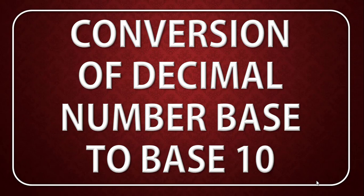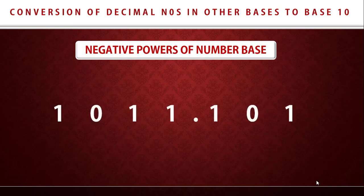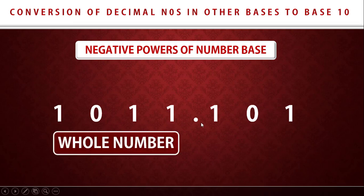In this lesson I'll be showing you problems related to decimal numbers in a particular base converted to base 10. Before we get started I need to make something clear about the negative parts of number base. For instance, given a number 1011.101, the 1011 is the whole number part — that's the number before the decimal point. This time around we are making use of decimal numbers, so we're making conversions with decimal numbers.